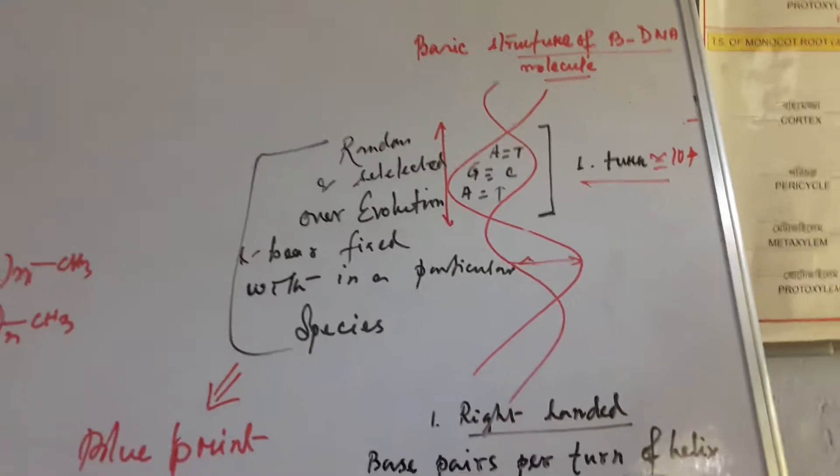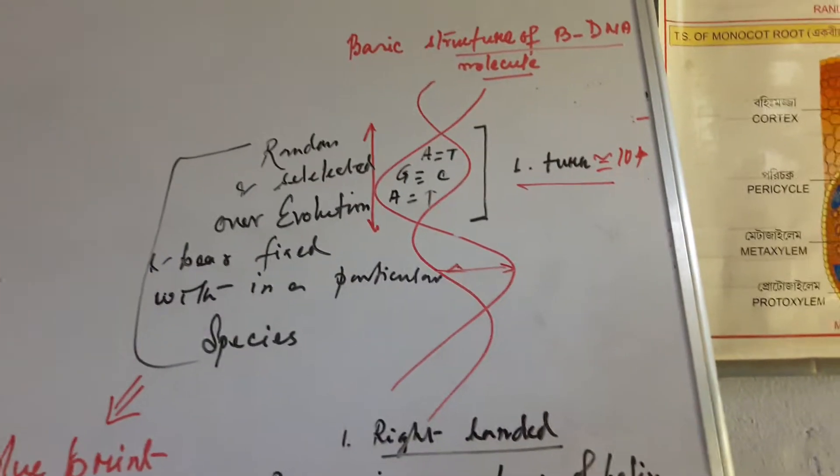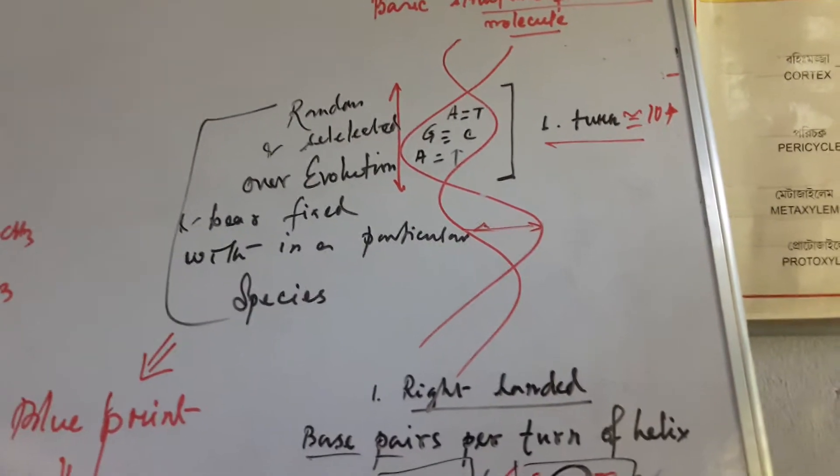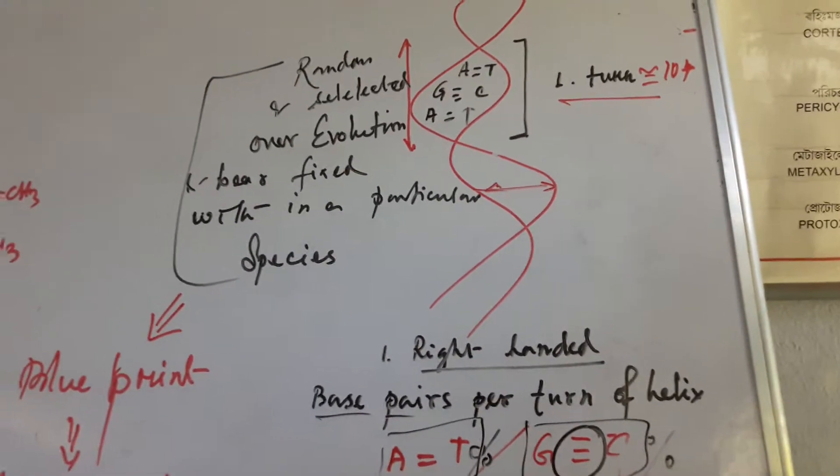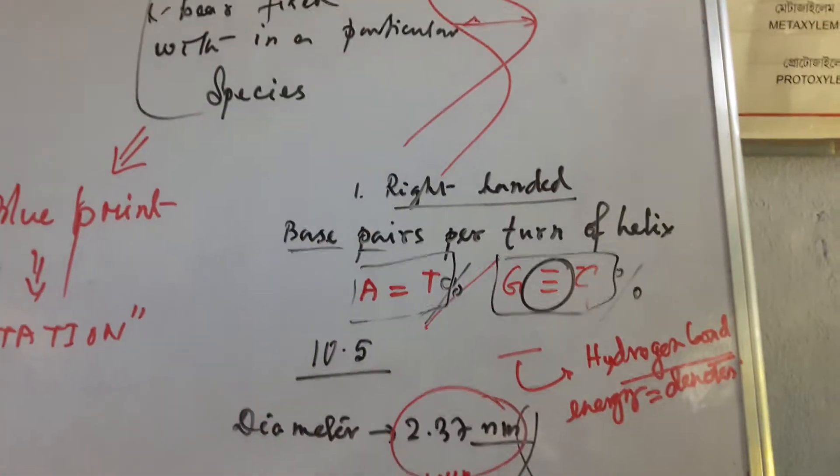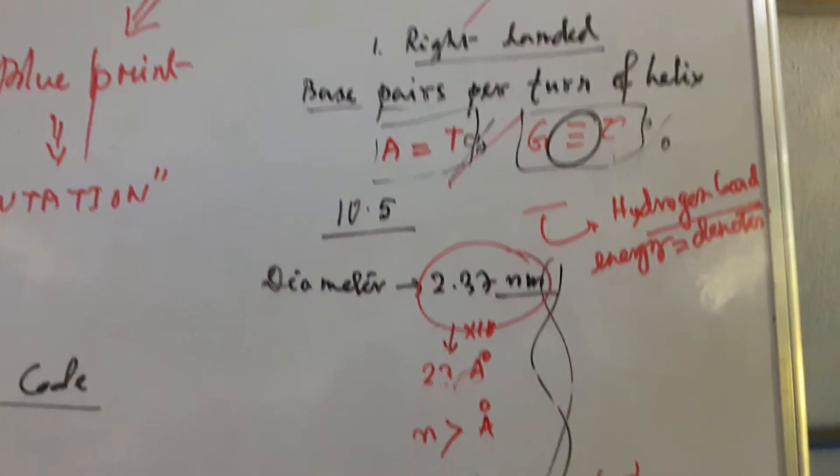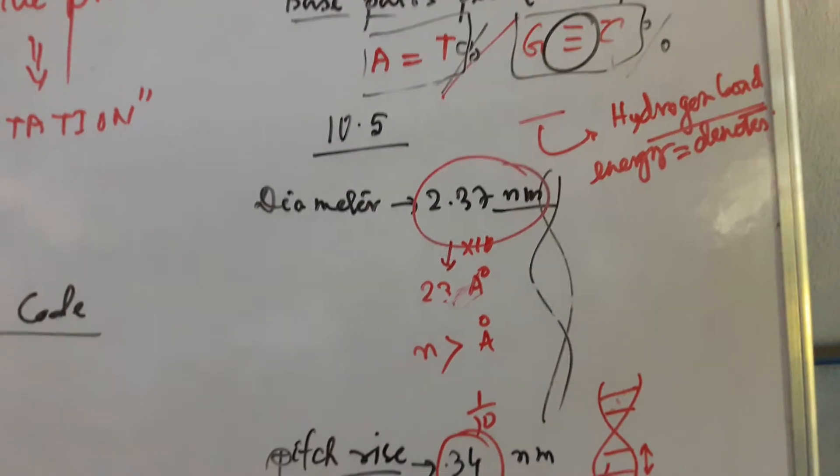DNA has three basic forms: A, B, and Z. Here we are highlighting in our class the B form of DNA molecule. Here you see every turn has 10.4 nucleotide base pairs. So base pairs per turn is given here as 10.5. The diameter within the two strands is 2.37 nanometers.